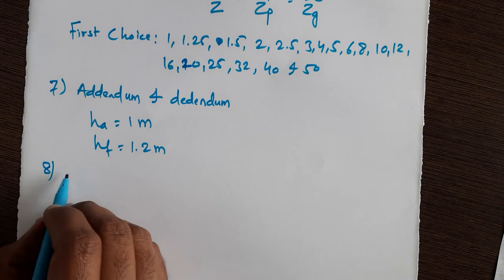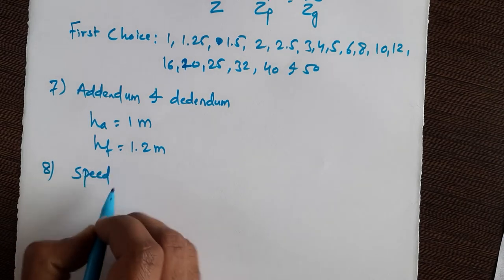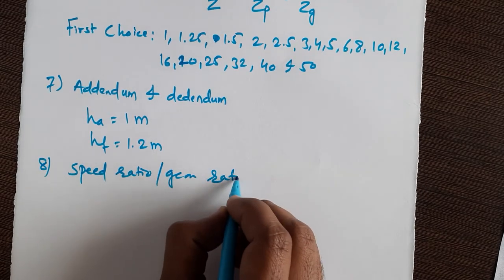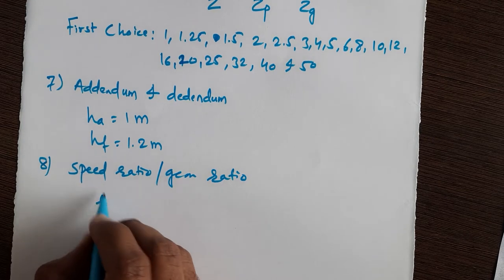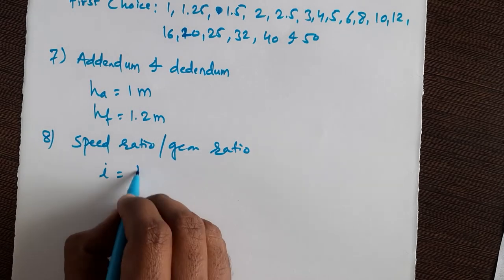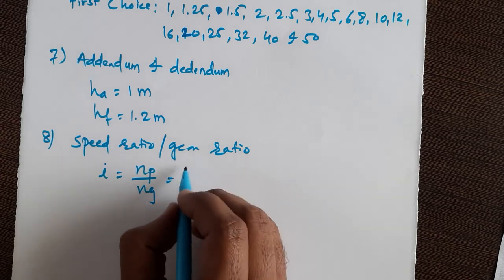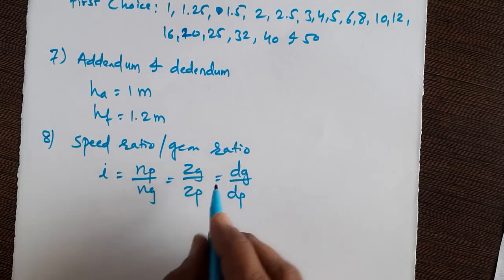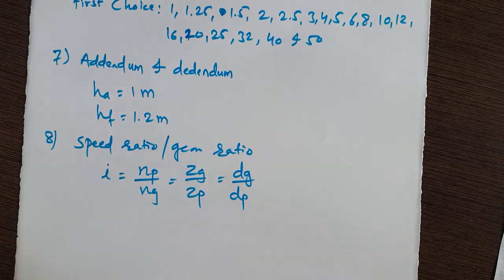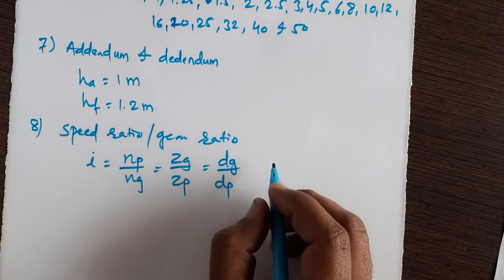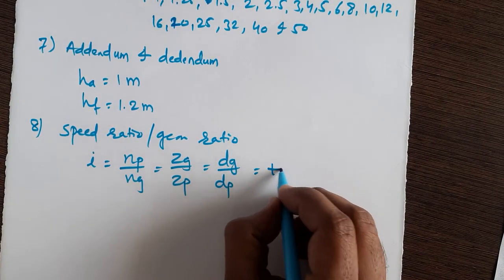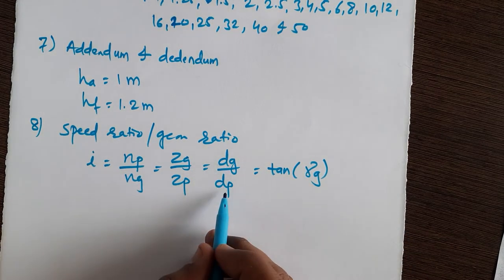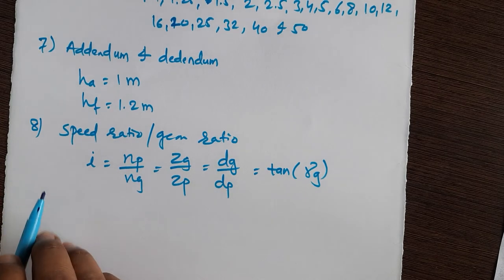The next terminology is speed ratio, also called gear ratio, denoted by I. I is nothing but NP by NG, or ZG by ZP, or DG by DP. The larger value should be in the numerator and the smaller value in the denominator. You can also write it as tan of gamma G, since tan gamma G equals DG by DP.